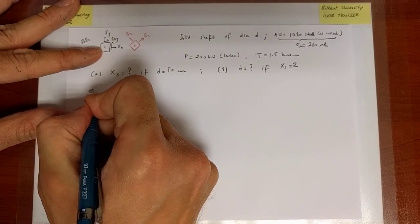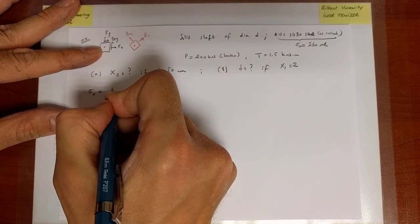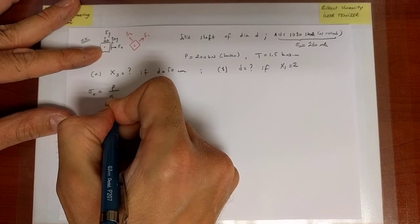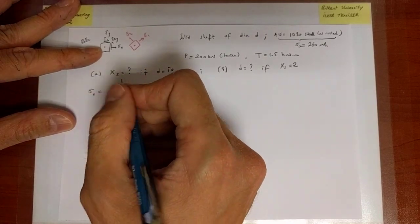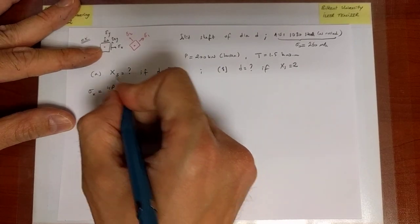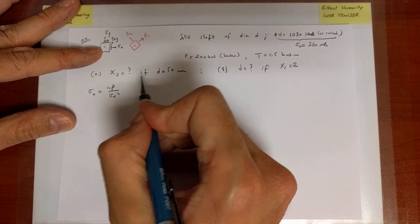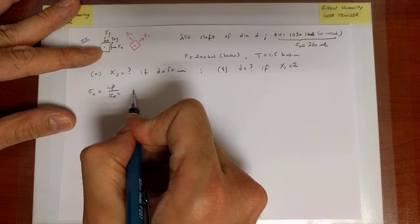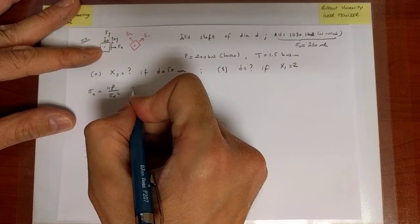The stresses are sigma x, the axial stress, which is simply load divided by area, P divided by pi d squared over 4, which comes out if I know the value of P and D to be a certain value, but I'm just going to leave it that way for now.